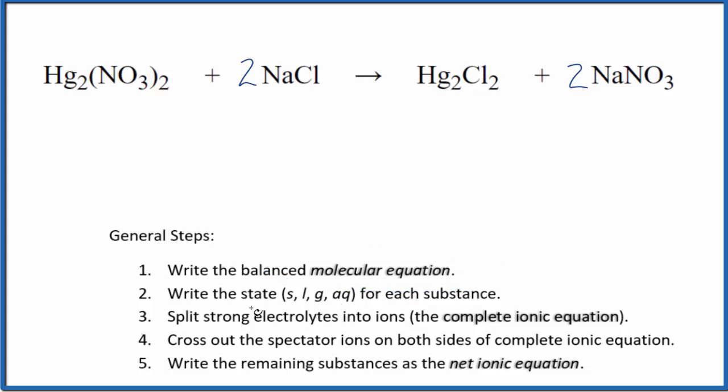Now we need to write the state for each substance. So compounds with the nitrate ions, if you know your solubility rules, compounds with the nitrate ions are very soluble. Compounds with sodium are also very soluble. So all of those things are going to be aqueous there, but the mercury one chloride, this Hg2Cl2, that is insoluble, just a little bit dissolved. So we say that this is going to be a solid. It'll be a precipitate that falls to the bottom of the test tube when these two substances react.